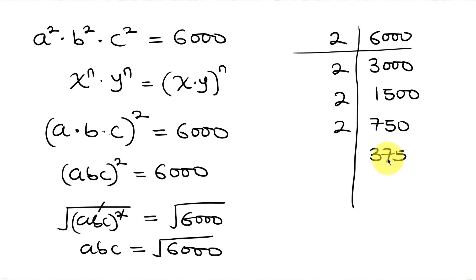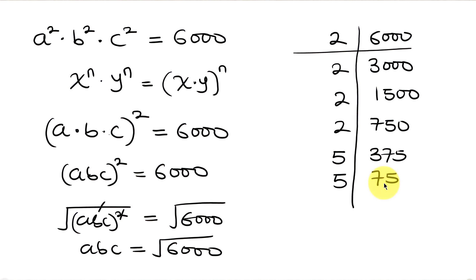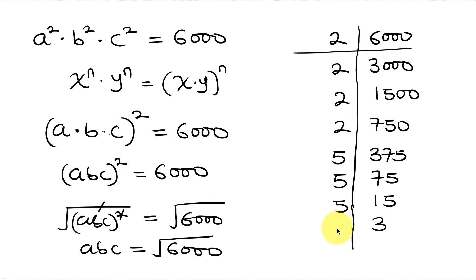Since 2 can't divide 375, we use 5: 375 divided by 5 is 75; 75 divided by 5 is 15; 15 divided by 5 is 3; and finally 3 divided by 3 is 1.